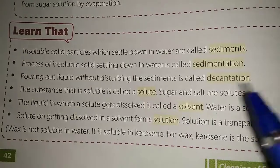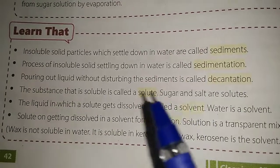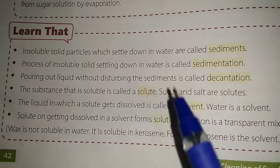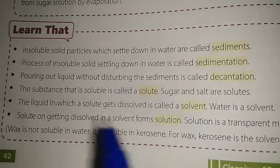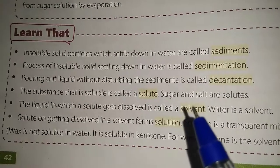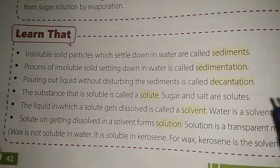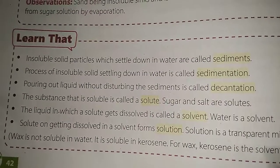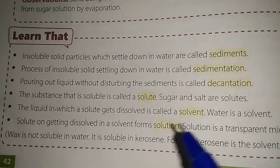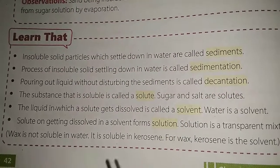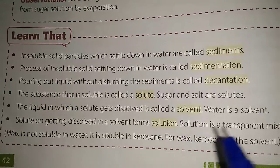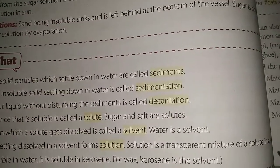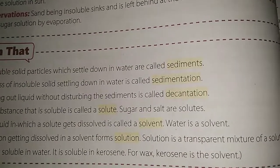Next is decantation. What is decantation? Pouring out liquid without disturbing the sediments is called decantation. What is solute? A substance that we add in the solvent is solute. For example, if we are making sugar-salt water, then sugar and salt are the solute and water is the solvent. A liquid in which the solute gets dissolved is called solvent. And the solute and solvent mix together to form the solution. Solution is the transparent mixture of solute and solvent.